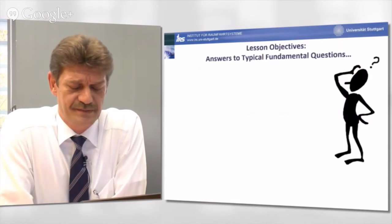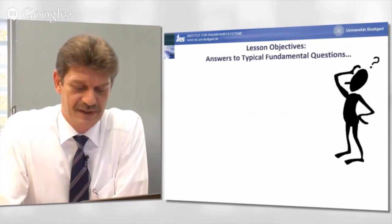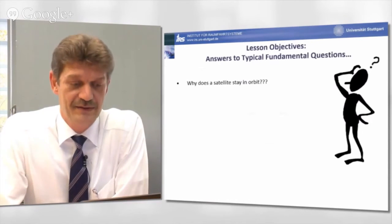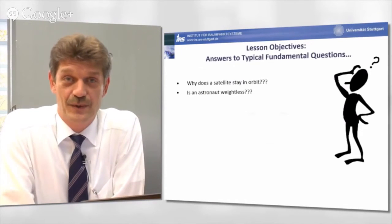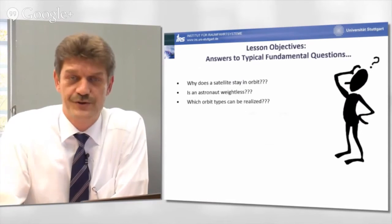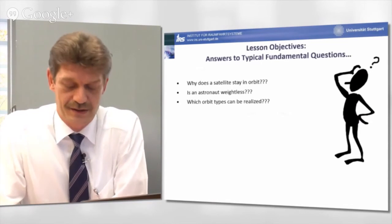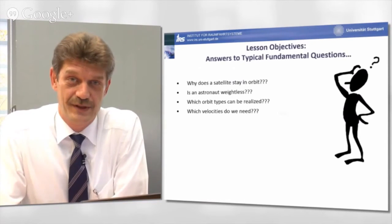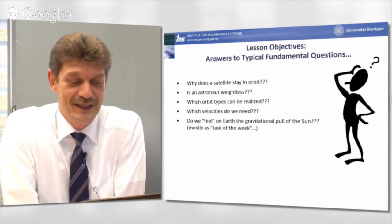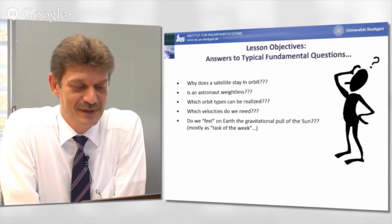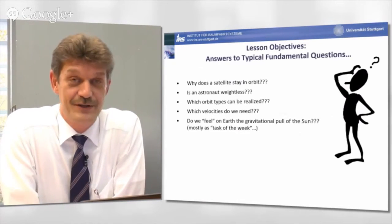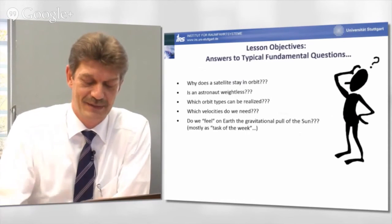The lesson objectives are to give answers to some typical fundamental questions. For example, why does a satellite stay in orbit? Or even identical, the question, is an astronaut weightless? Another question might be, which orbit types can we realize? And which velocities do we need for these orbits? And finally, I will give a brief introduction also to the task of the week. I would like you to give an answer on the following question: Do we feel on Earth the gravitational pull of the Sun?